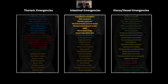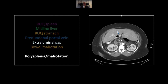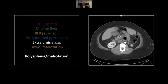We'll start with a case of polysplenia with malrotation and perforation, as is frequently the case with these cardiosplenic syndromes. There is a right upper quadrant spleen that is multilobulated, a midline liver, and there is the gastric fundus in the right upper quadrant. A little lower down, you can see the characteristic pre-duodenal portal vein. Note its relationship to the duodenum, which is coming across from right to left. There is a focus of contained extraluminal gas, probably retroperitoneal.